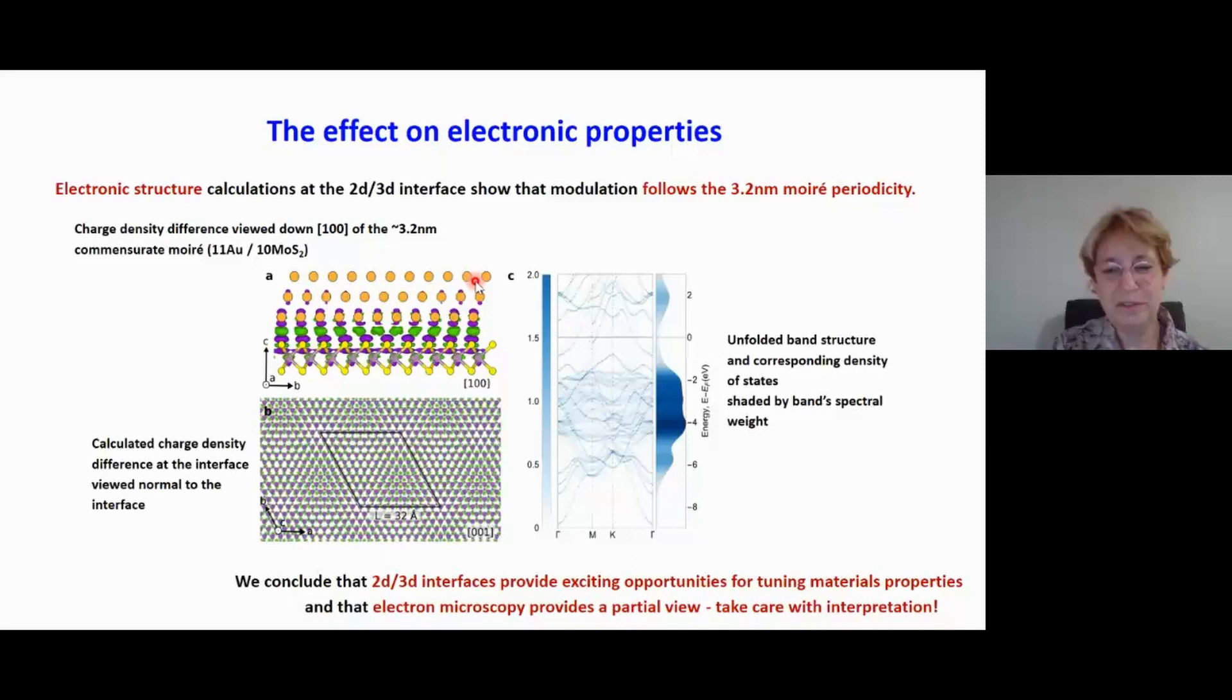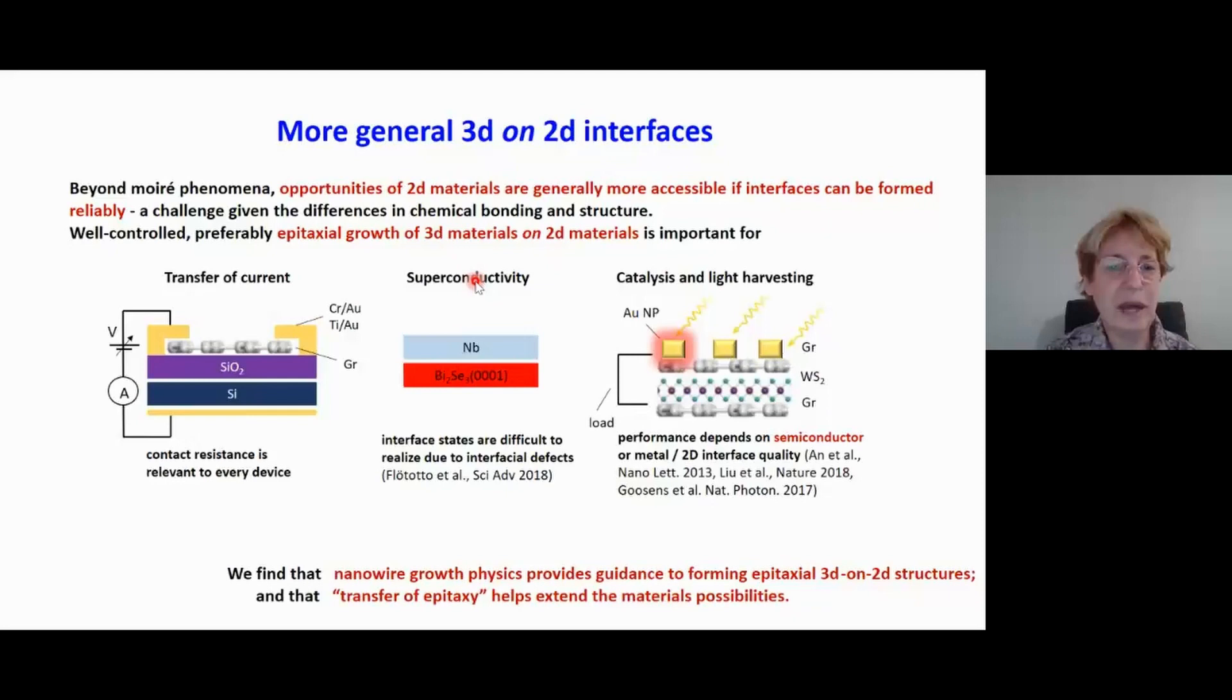In fact, the 3D structure of a 3D-2D interface is very important in determining the electronic properties because the electronic properties depend primarily on only the gold atoms that are closest to the 2D material. The ones above don't play that much of a role. So 2D-3D interfaces provide exciting opportunities for tuning up materials properties. Let's extend this a little bit further by asking ourselves, how can we more generally understand the interface between a 2D material and a 3D material? How can we create particular interfaces that we might want to work with? Many of the devices that use 2D materials do require a very nice interface between the 2D material and some 3D structure in order to get the properties that you want in the final device.